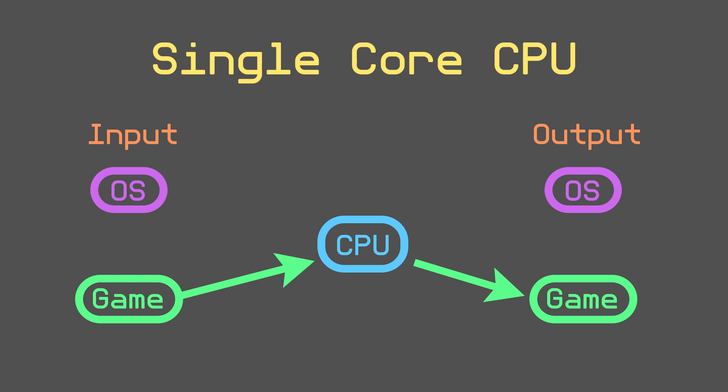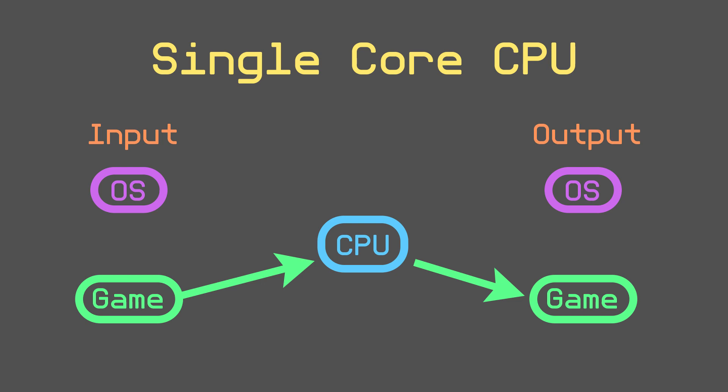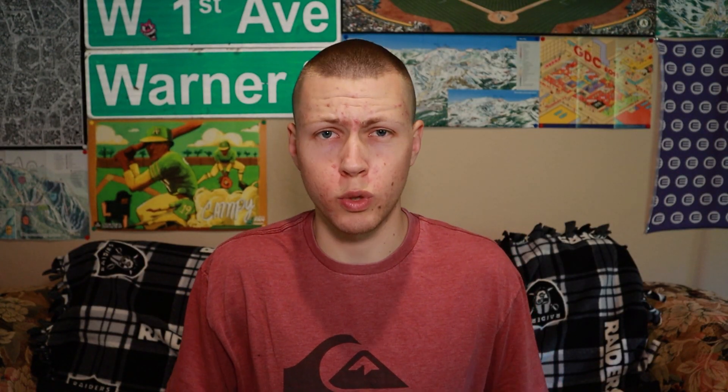As a simple example, let's say the computer running your program has a single-core CPU. That means the CPU not only has to iterate through all the instructions of your code line by line, but it also has to handle all the background processes related to the operating system.